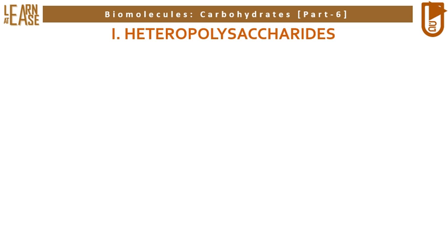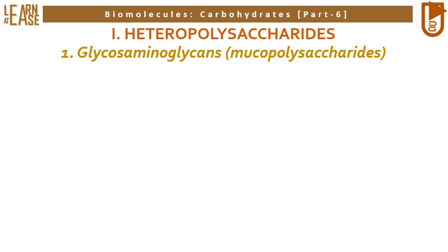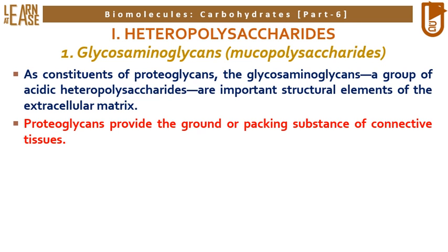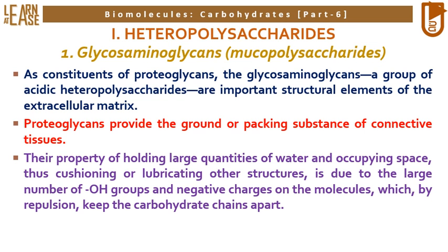The first family of heteropolysaccharides is glycosaminoglycans, also known as mucopolysaccharides. As constituents of proteoglycans, glycosaminoglycans are a group of acidic heteropolysaccharides that are important structural elements of the extracellular matrix. Proteoglycans provide the ground or packing substance of connective tissues. Their property of holding large quantities of water and occupying space, thus cushioning or lubricating other structures, is due to the large number of OH groups and negative charges on the molecules, which by repulsion keep the carbohydrate chains apart.